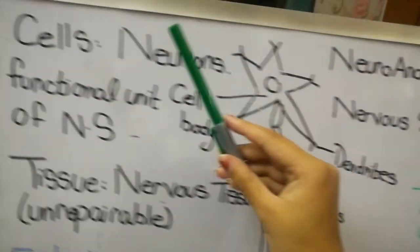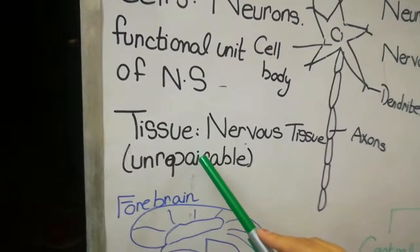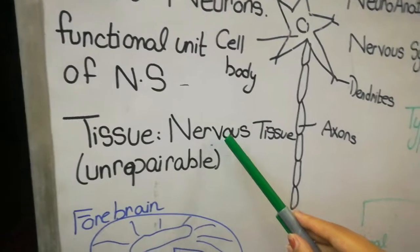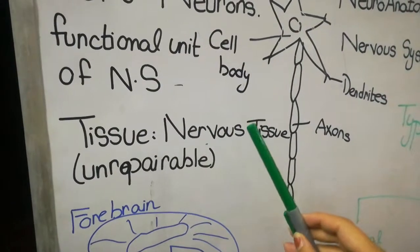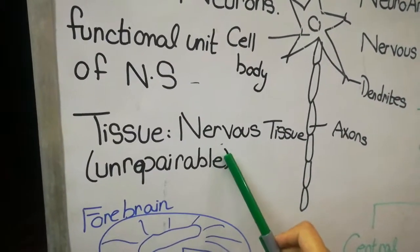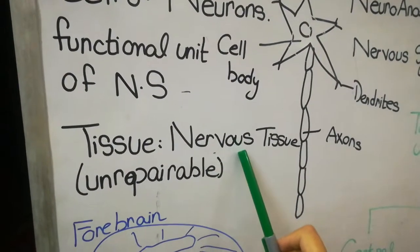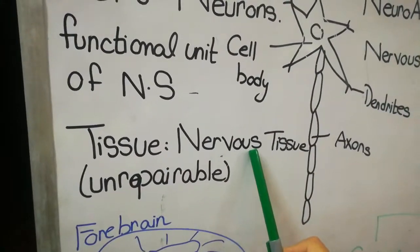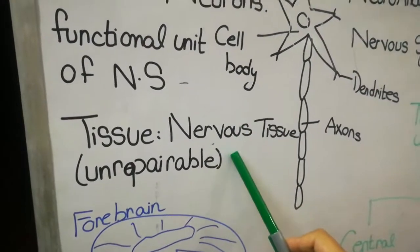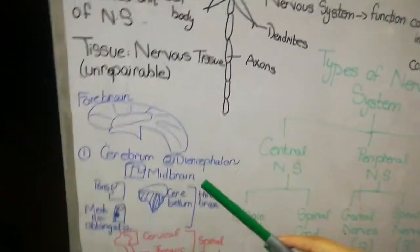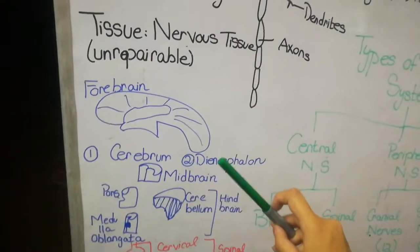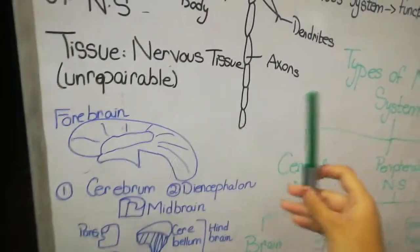Now, if there is a cell, there is obviously going to be a tissue. The tissue here is the nervous tissue. One very important function of nervous tissue is that it is unrepairable. So if there is any injury or damage to the nervous tissue, it will not repair, and as a result all the coordination performed by your brain and spinal cord will not occur, and the person will result in many diseases.